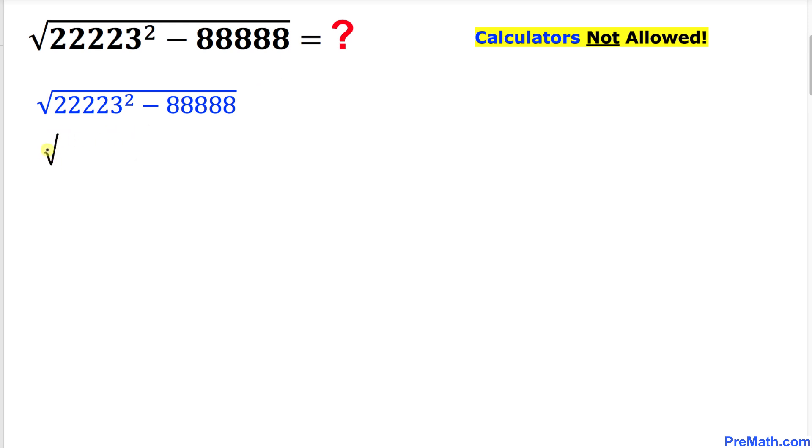Therefore I can write this thing as square root of 22,222 plus 1 whole squared minus 88,888. Now to make things simple let me go ahead and make a substitution. Let me go ahead and call this part as A.